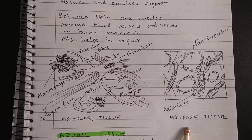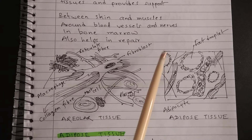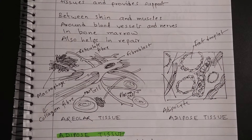Adipose tissue is composed of fat globules — you can also call it fat tissue. It is found below the skin and beneath the organs, and it provides insulation and cushioning. In the diagram, you can see fat globules surrounded by matrix. Fat deposits below the skin are responsible for the accumulation of body fat.